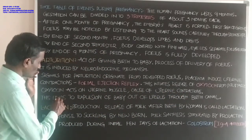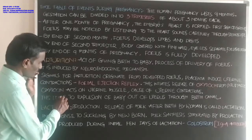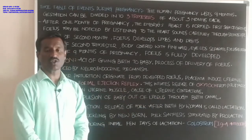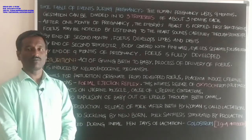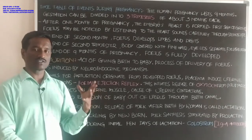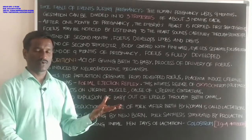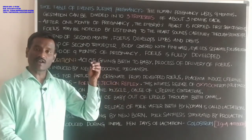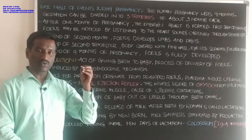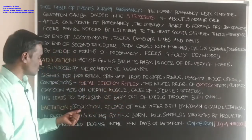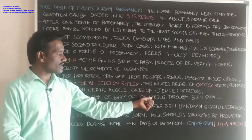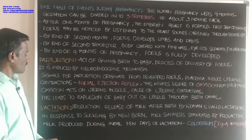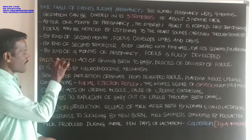This leads to expulsion of the baby out of the uterus through the birth canal. Excess oxytocin released by the pituitary gland increases the contraction of the uterine muscles and finally leads to expulsion of the baby out of the uterus through the birth canal.